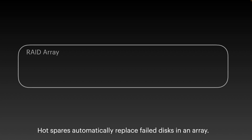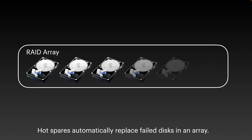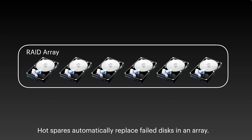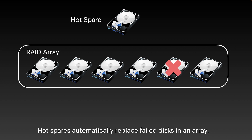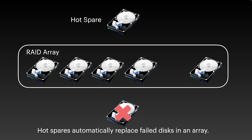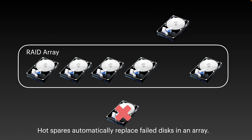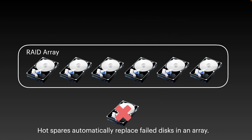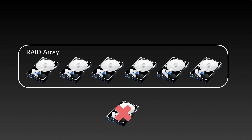Just like RAID 5, the larger the array the lower the parity tax — with four disks or sixteen, you still only need the capacity of two set aside for parity. Many NAS devices allow you to provision a hot spare disk, which sits in standby ready to replace any failed disk. For larger arrays this can be beneficial to return an array to good health quickly, though personally I prefer to evaluate the health of the disks and the backups before initiating a RAID rebuild, at least for SMB and home NAS use cases.